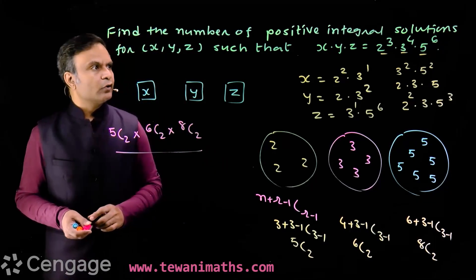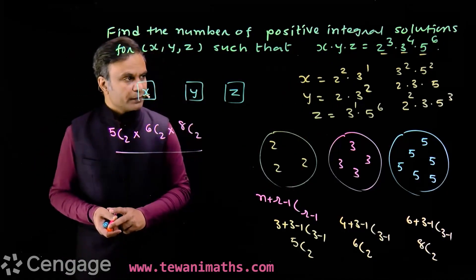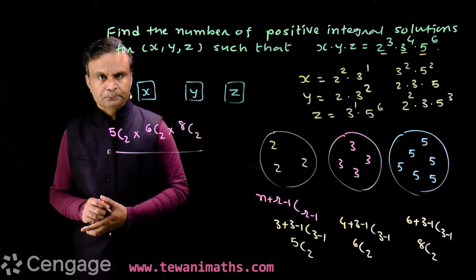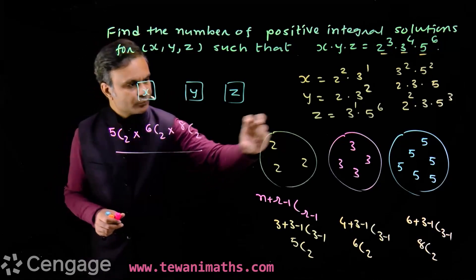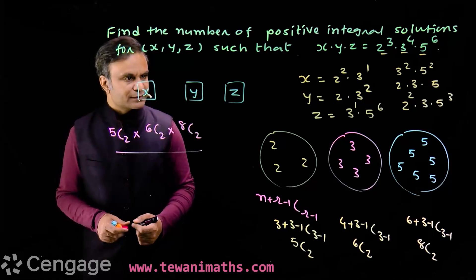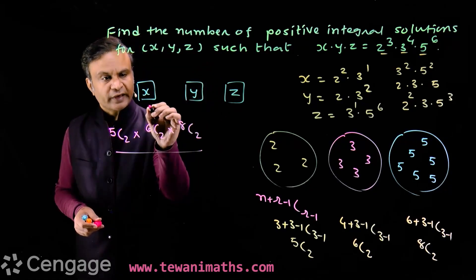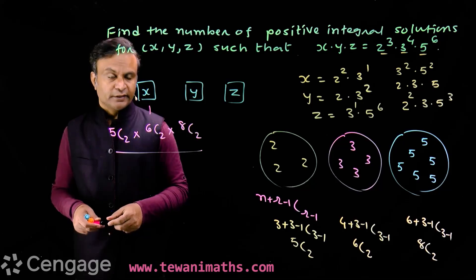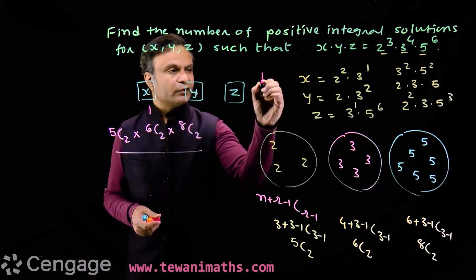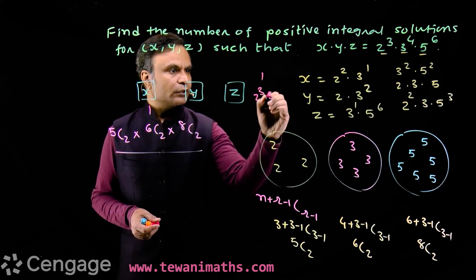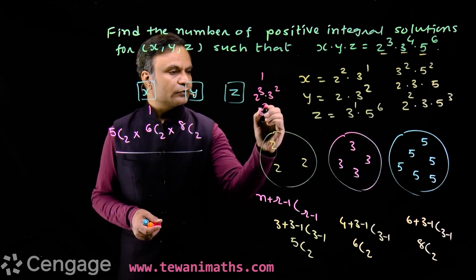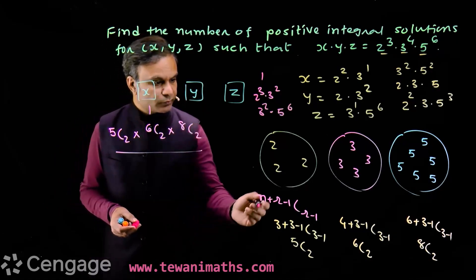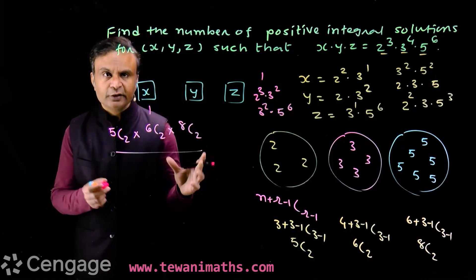This product equals the number of positive integral solutions of the equation. This uses the concept of distribution of identical objects. Note that it may happen that x receives none of the factors — all factors go to y and z — in which case x = 1. This is also a valid solution, and it is accounted for because we are allowing empty groups in this formula.